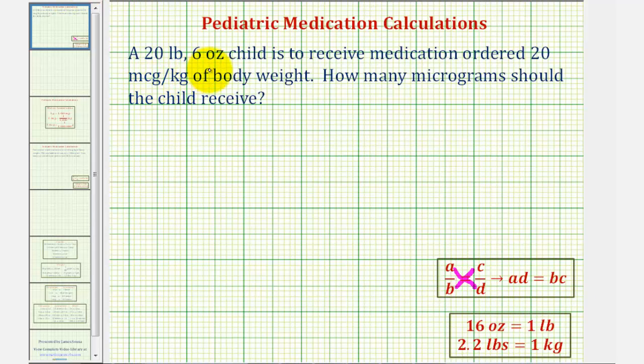Here we're given a 20 pound, six ounce child is to receive medication ordered 20 micrograms per kilogram of body weight. How many micrograms should the child receive?